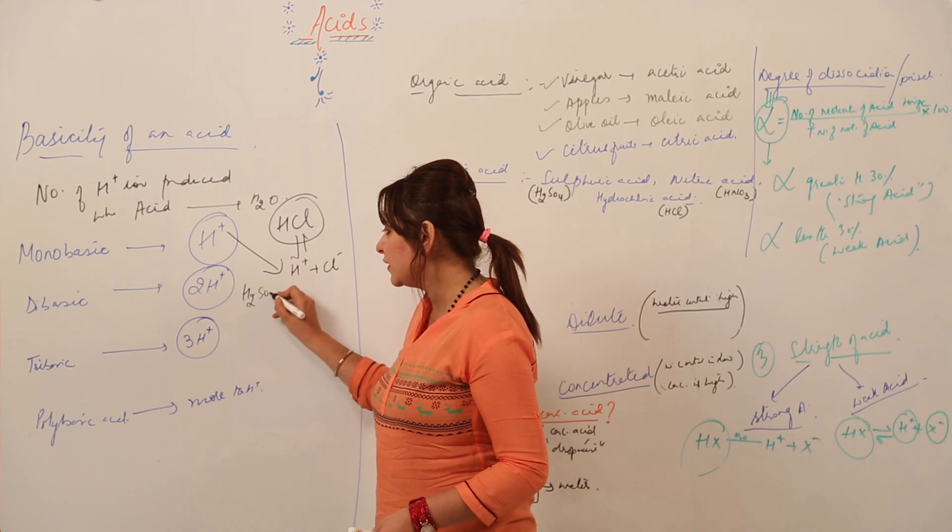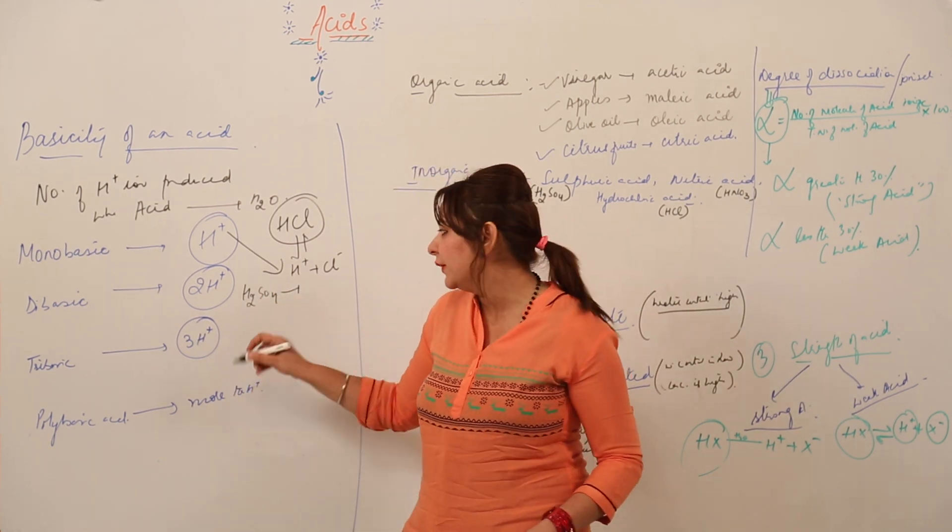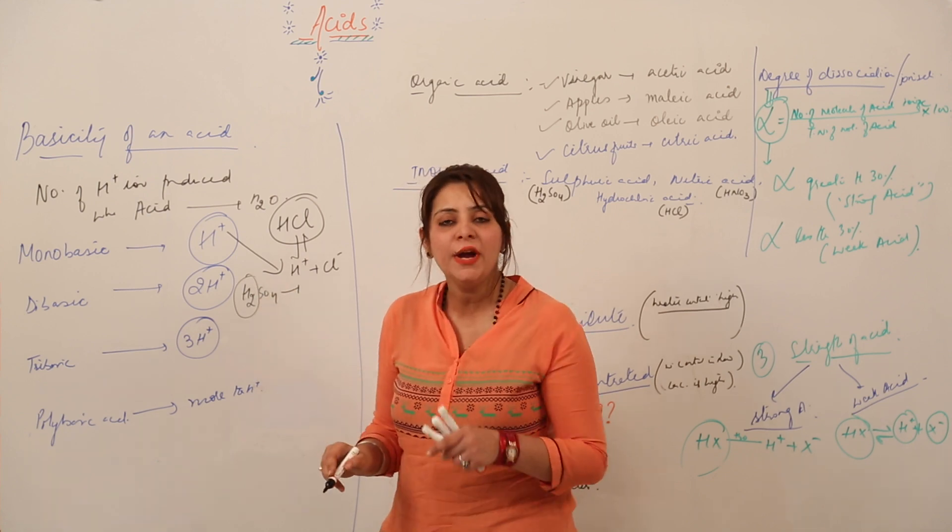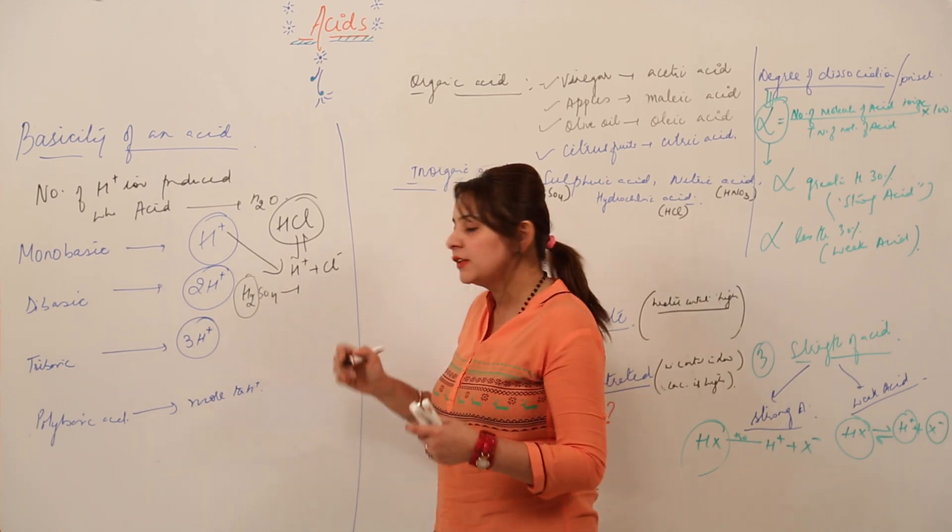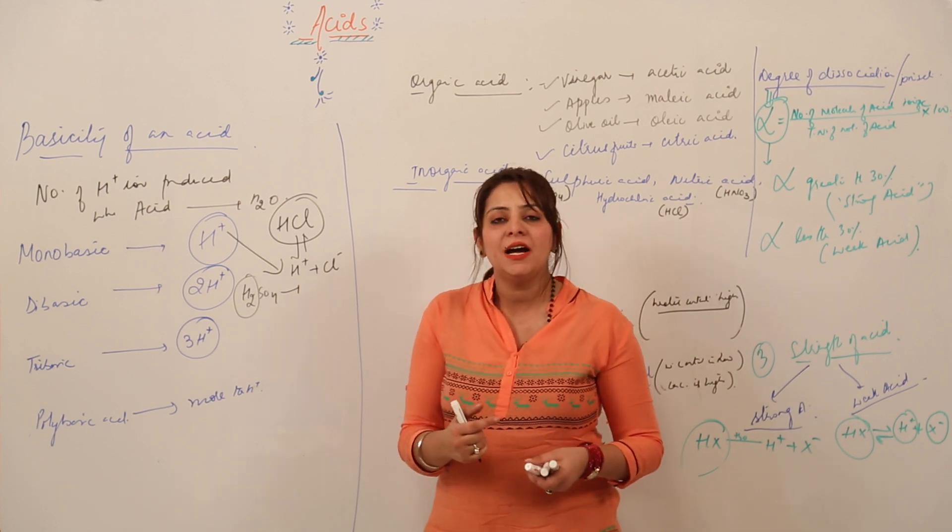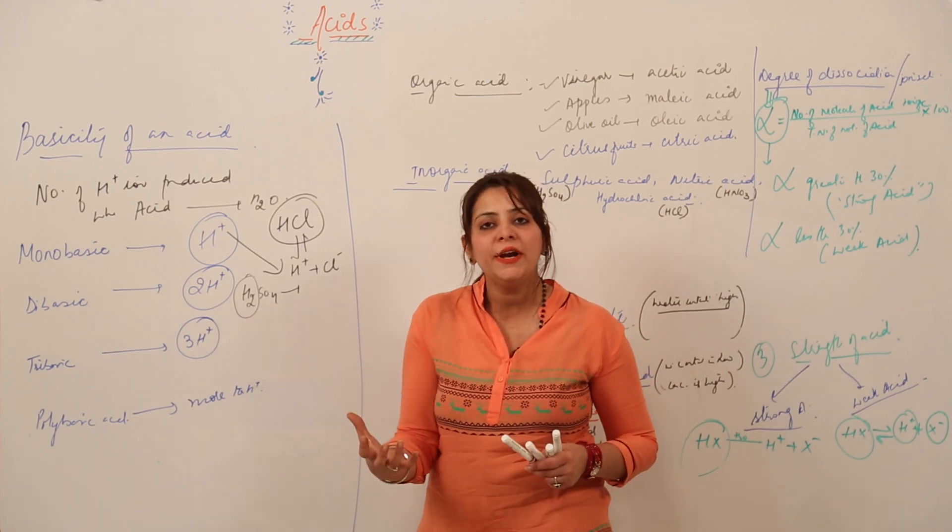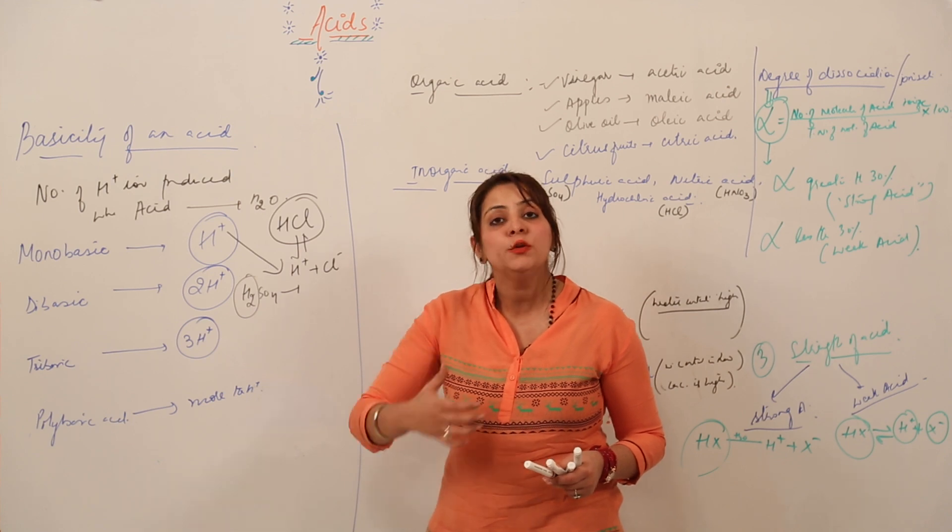Similarly, we have sulfuric acid. How many H+ ions do you see here? Yes, you are right, there are two H+ ions. So it will be giving two H+ ions in two different steps.